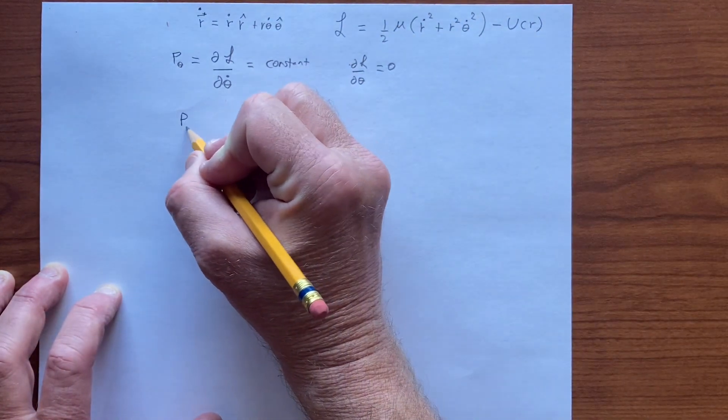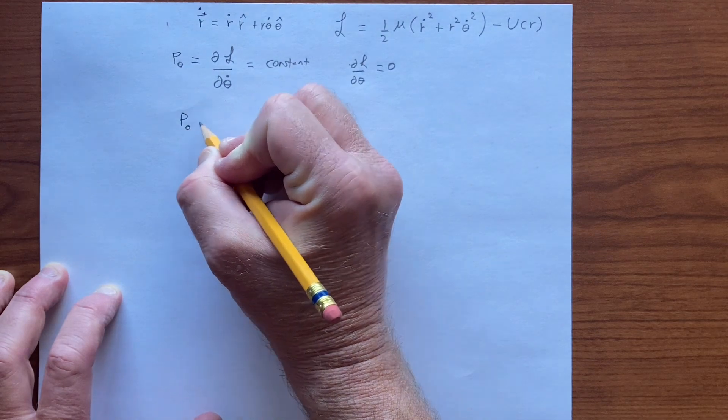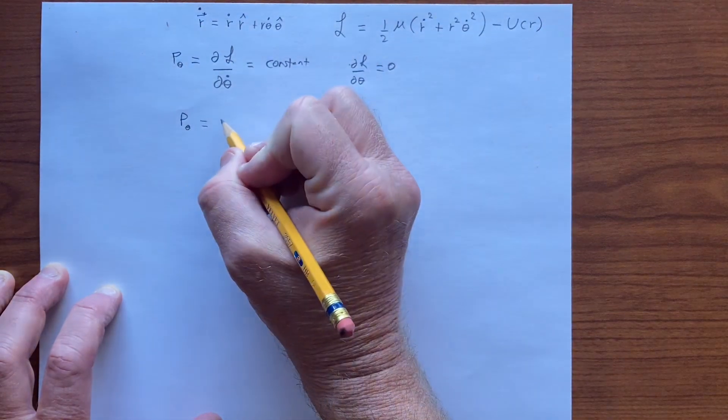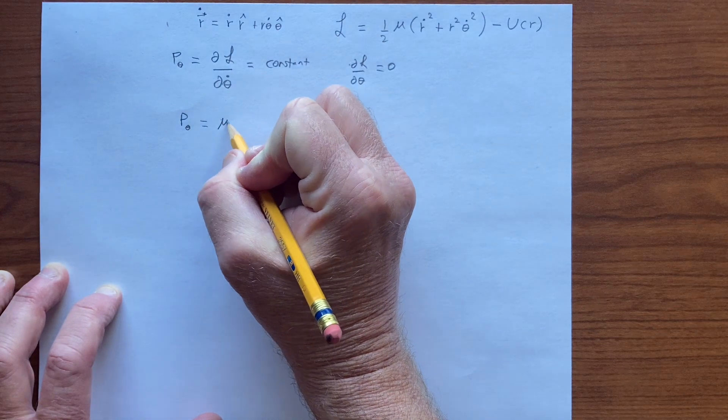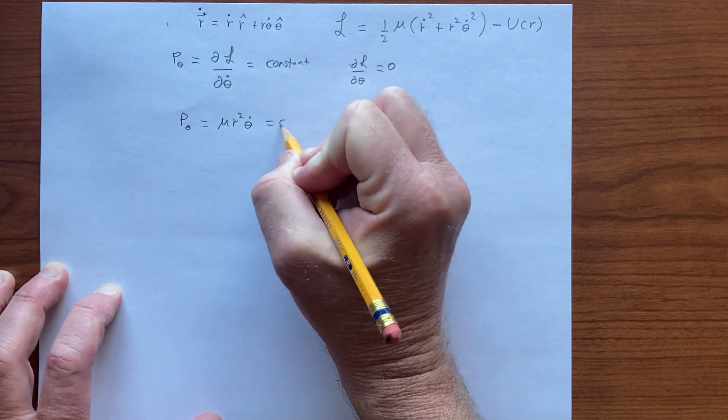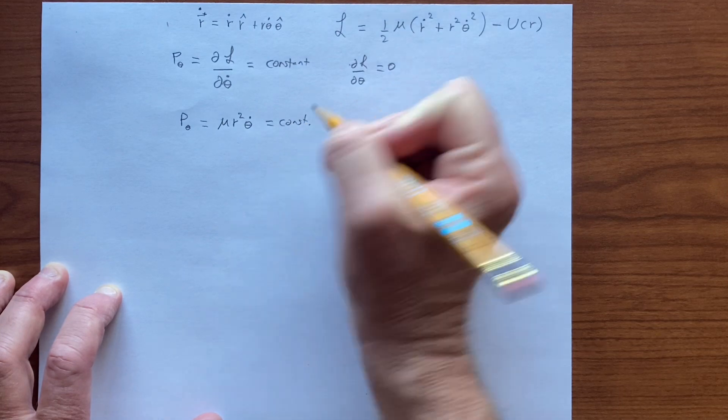So we have a p theta, which in this case is mu r squared theta dot. That's the constant.